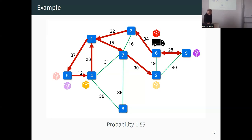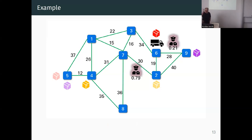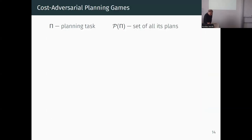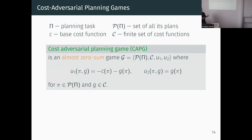So you need to plan paths for your trucks and randomize them to avoid radars, while the police randomize their radar placements. Formally, what we discuss in our paper: whenever you have a planning task with a set of plans and a base cost function giving the base cost of actions, plus an extra set of cost functions that the opponent can choose to modify your base costs, you can define a game where the planning player plays plans and the opponent plays cost functions. This is almost zero-sum since the planning player's utility is the negative of the plan cost.